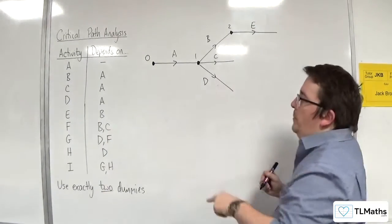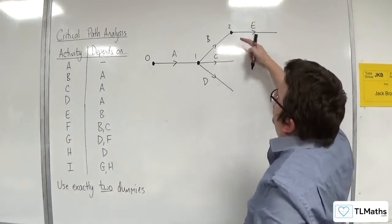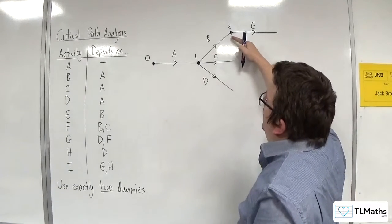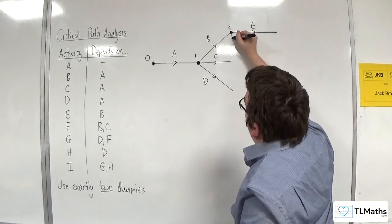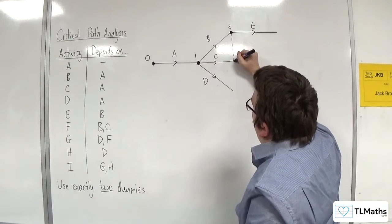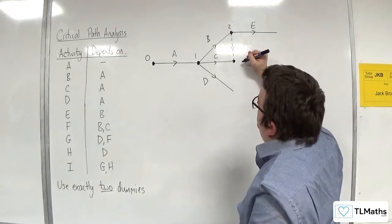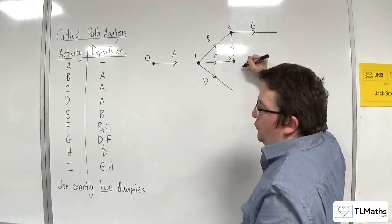F relies on both B and C. So, because B is already here, and I've got C here, I'm going to have to have my first dummy joining those up. So, I'll put an arrow on it there. This is going to be number 3.